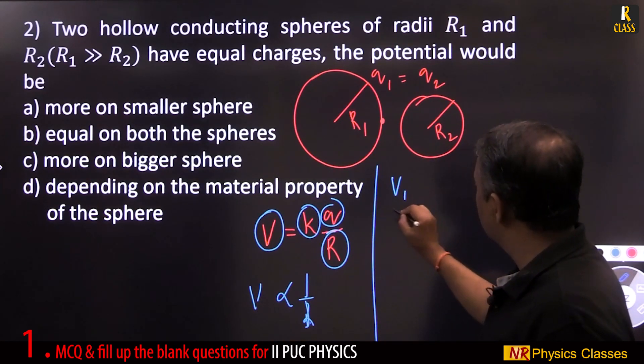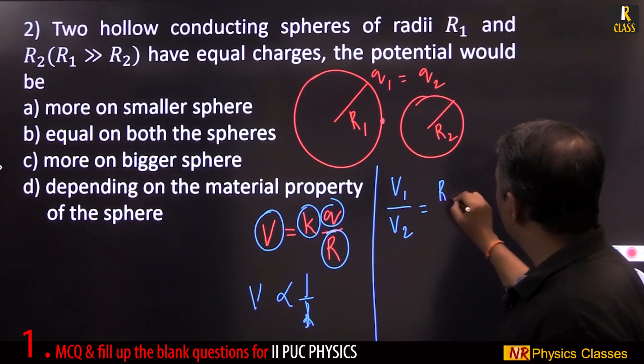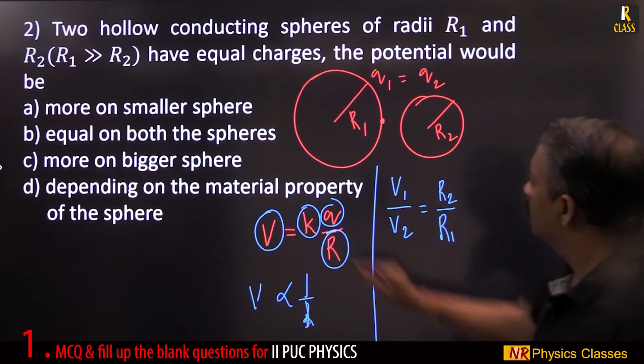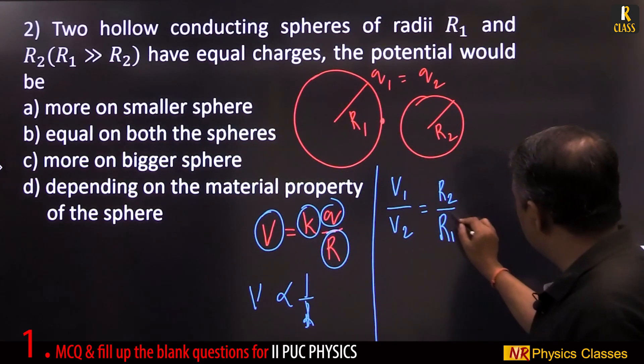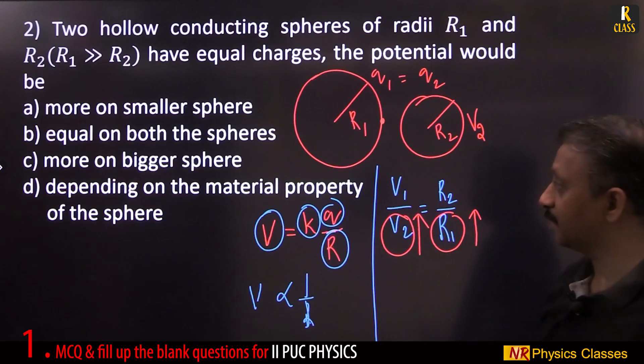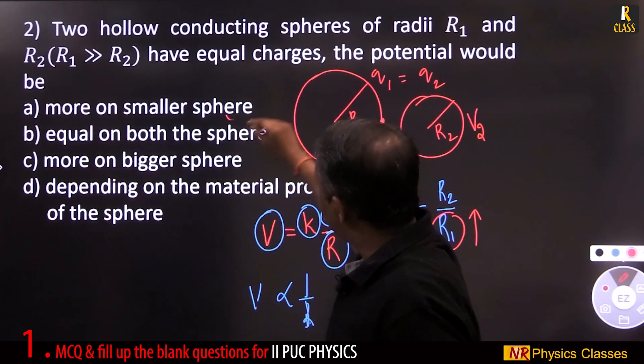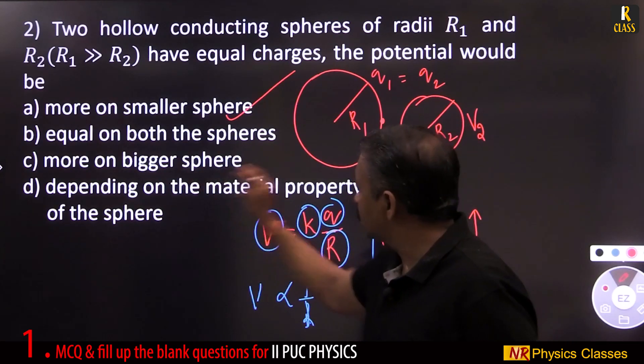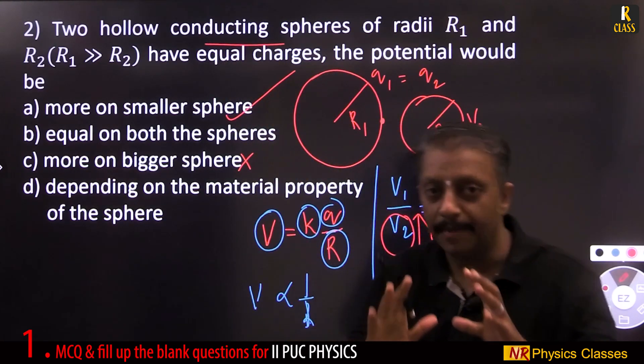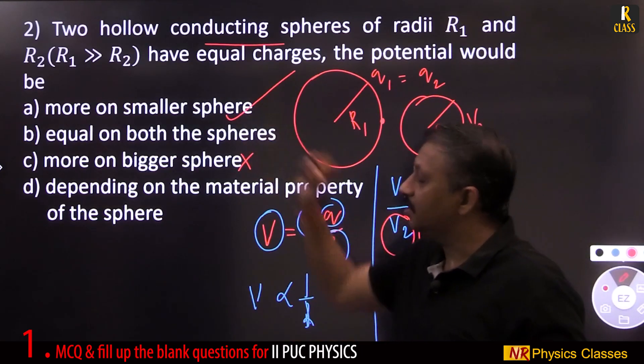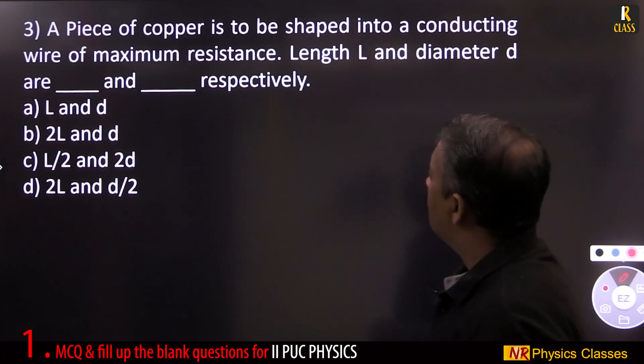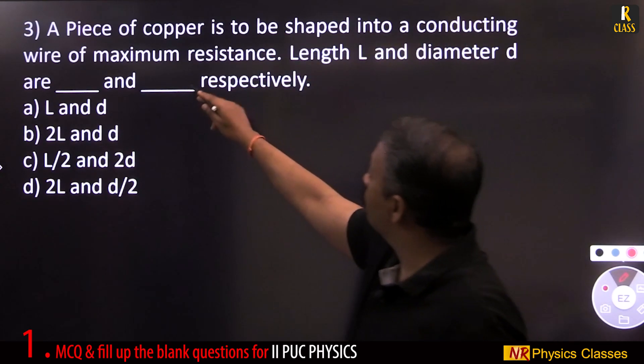As a result, v1 by v2 equal to r2 by r1. Now observe the relation: r1 is greater, this is greater means v2 should be greater. V2 means potential of the smaller sphere. More on smaller sphere. Yes. Equal? More on bigger sphere? No. Depending on the material property of the sphere? Conducting sphere means metallic sphere. So it is more on the smaller sphere.